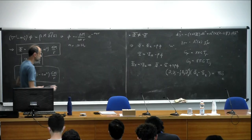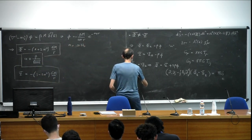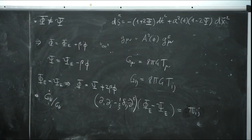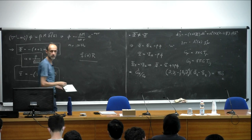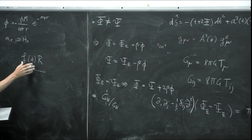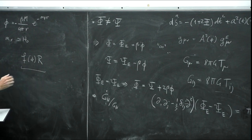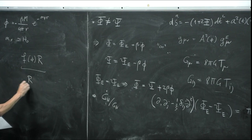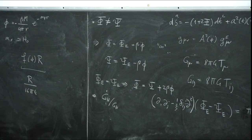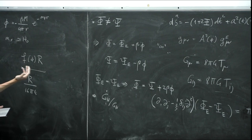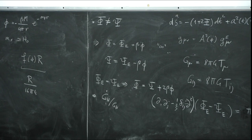The third effect is that Newton's constant can run — it can depend on time. In the Jordan-frame action, the 1/(16πG) factor is replaced by F(φ)/2, and if φ evolves in time so does the effective G. Specifically, Ġ/G is proportional to 2β φ̇, which is observationally constrained.